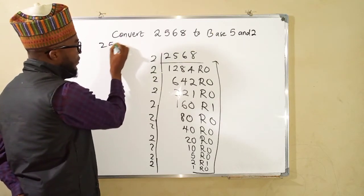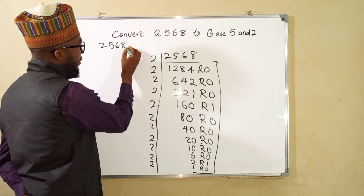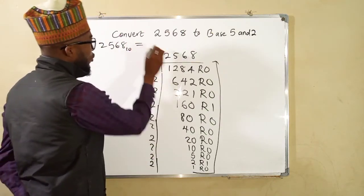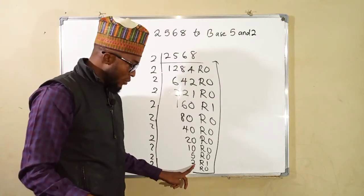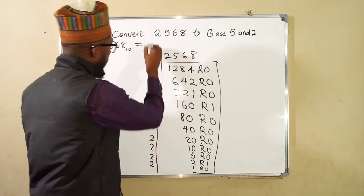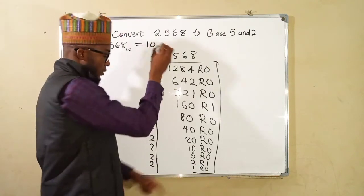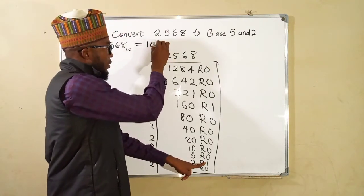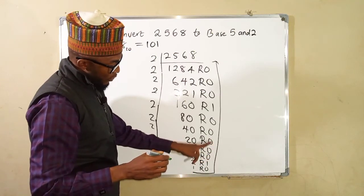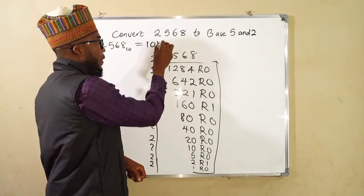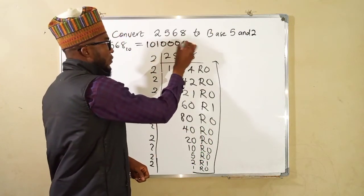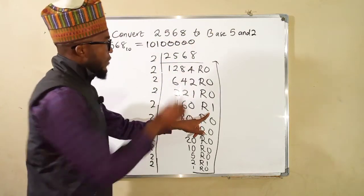2568 is a number in base 10, it will be equal to we start with this number here which is 1. Then we move to the right, we have 0, we have 1, then we have 0s 1, 2, 3, 4, 5, 1, 2, 3, 4, 5, then we have 1. Then we have 3 other 0s.